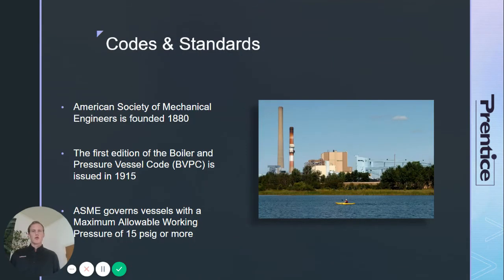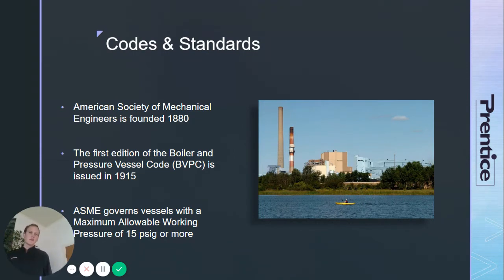The most important code is written by ASME, which was founded in 1880 as a result of many of these industrial disasters. In 1915, they came out with the first edition of the Boiler and Pressure Vessel Code, and that document is still used today — obviously updated quite a few times, including in the 1950s and 60s when they added rules for nuclear pressure vessels.